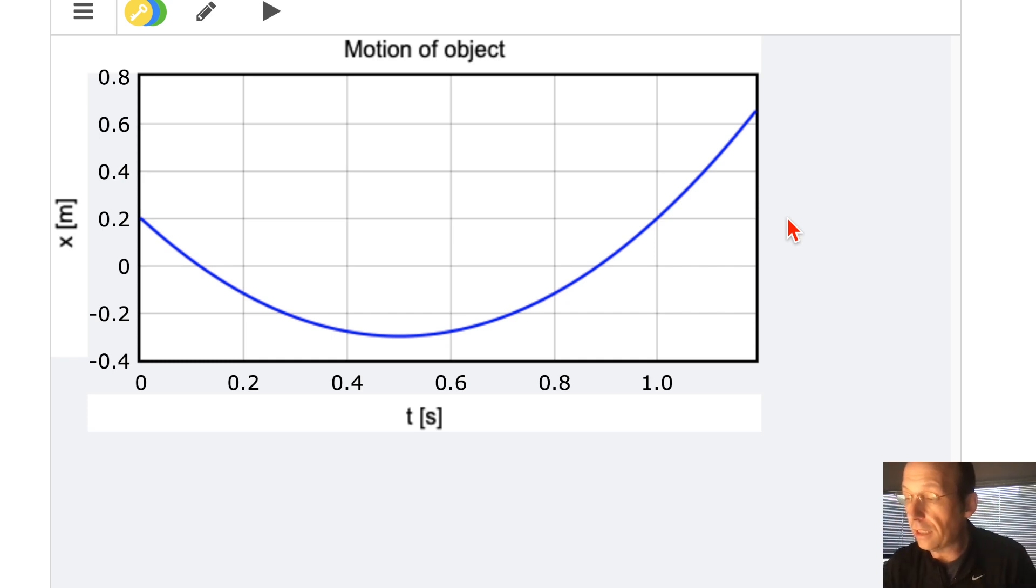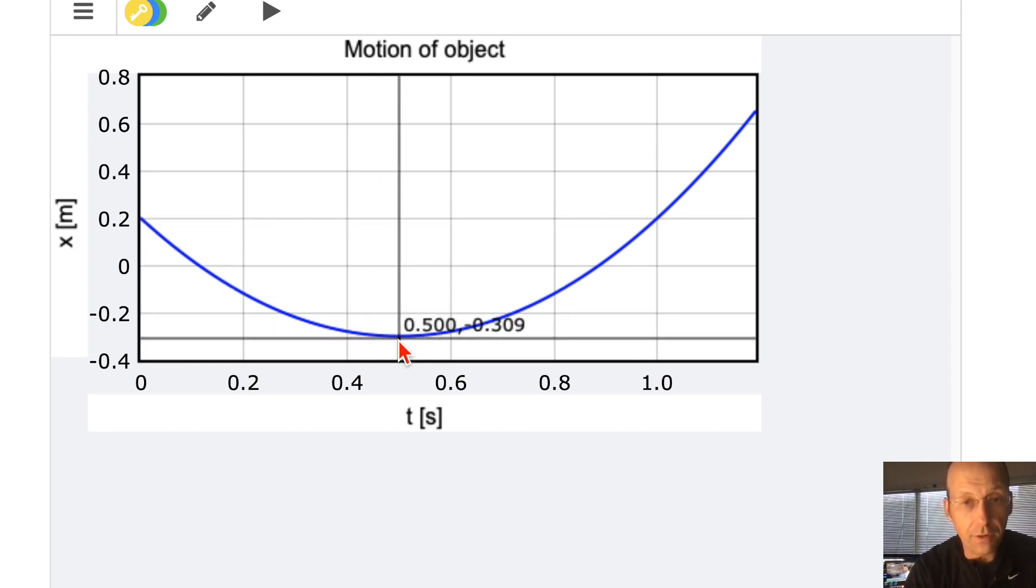So the next question said, what is the displacement from T equals 0 to T equals 0.5? So at T equals 0, X is equal to 0.2. At T is 0.5, I can just go down here, 0.5.